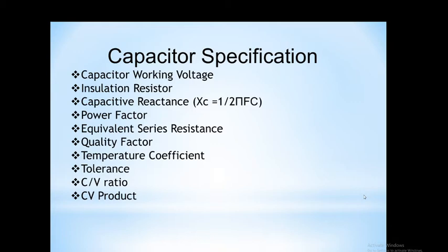The second specification is insulation resistance. The insulation resistance of a capacitor is important in most circuits and measures the resistance offered to a DC current flowing through the capacitor under steady state condition.